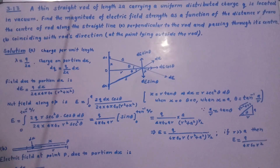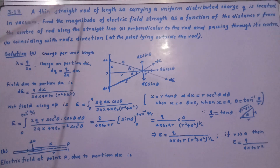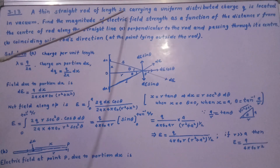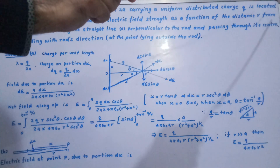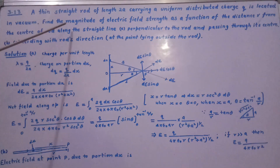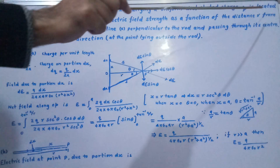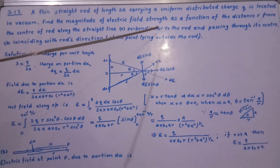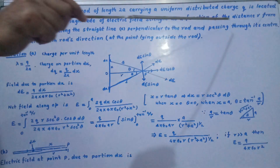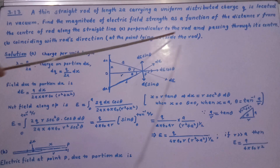This is R.K. Sharma from IIT. We are going to study question number 3.13 from Irodov. A thin straight rod of length 2A carrying a uniformly distributed charge is located in vacuum. Find the magnitude of electric field strength as a function of the distance R from the center of the rod: Part A, perpendicular to the rod and passing through its center, and Part B, coinciding with the rod's direction at a point lying outside the rod.